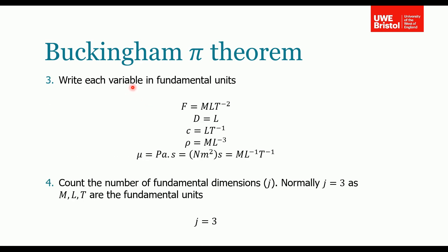Step three: write each variable in terms of its fundamental units. Force can be written as mass times length over time squared. Diameter is simply length. Velocity is length over time. Density is mass over length cubed. Viscosity has SI units of Pascal seconds; Pascal is Newton per meter squared, and substituting back to fundamental units, viscosity has fundamental units of mass over length over time, or M L⁻¹ T⁻¹.